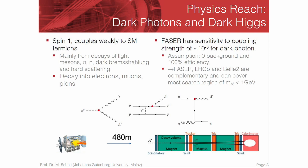The physics reach — let's go for three cases, starting with dark photons or dark Higgs bosons. They would mainly come from the decay of light mesons, pions, etc., from dark bremsstrahlung or hard scattering events. We assume they can decay into electrons, muons, and pions. So we have the ATLAS interaction point and 480 meters of nothingness, then we first come to a scintillator and a decay magnet. In the decay volume there is a magnetic field, and then with the A-prime decaying to, for example, plus and minus, we have tracking stations and a calorimeter.